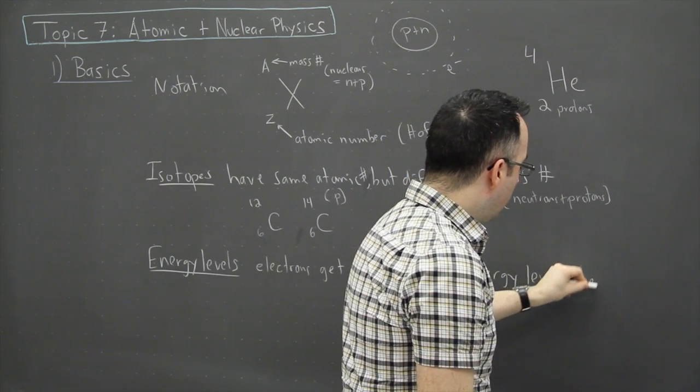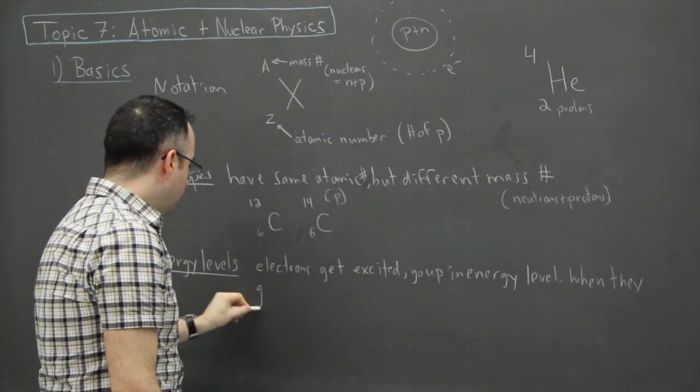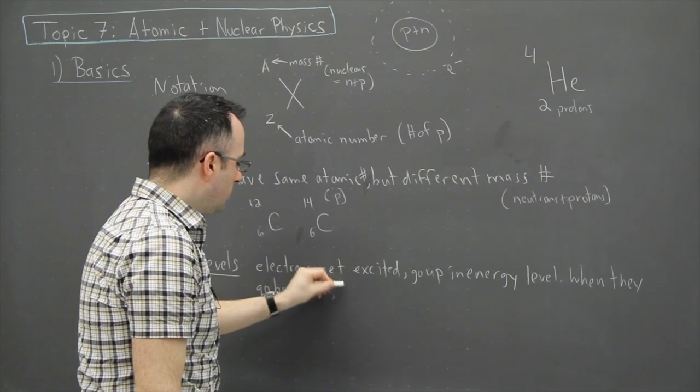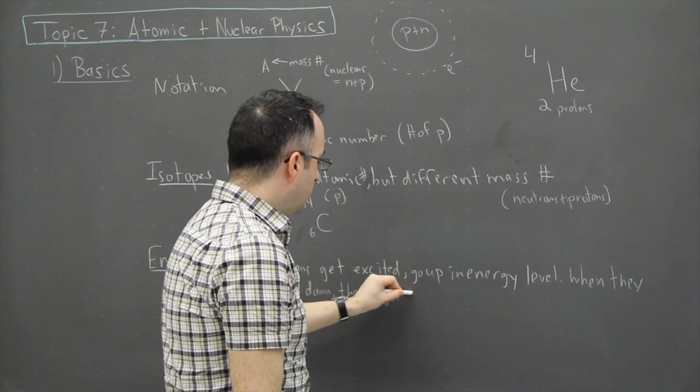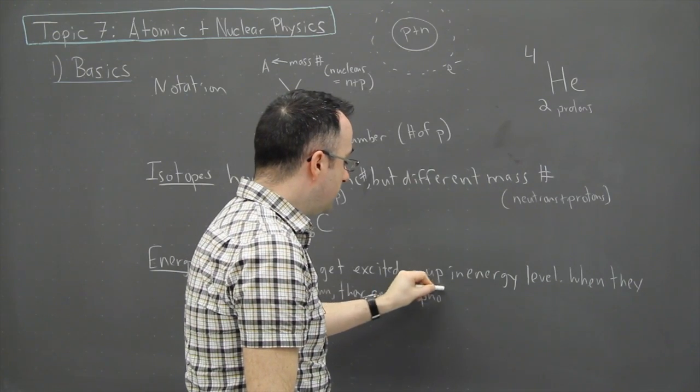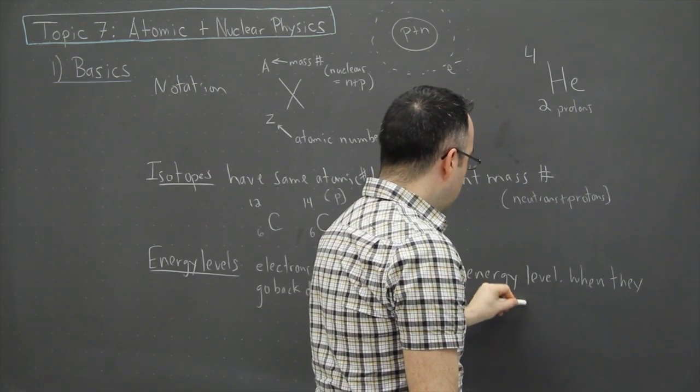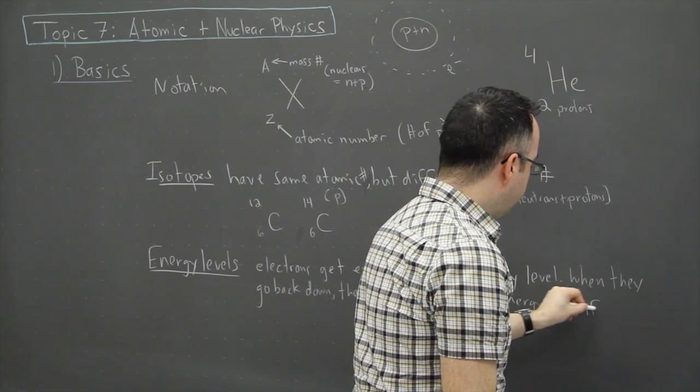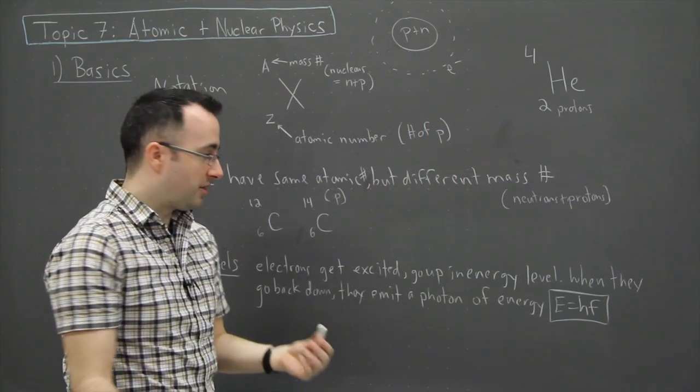When they go down, so when they go back down, they emit a photon. In other words, a little piece of light of energy, E equals hf. Okay, so I'd better show you a little bit about that one. What I mean here is, let's say maybe off to the side here I can draw this.